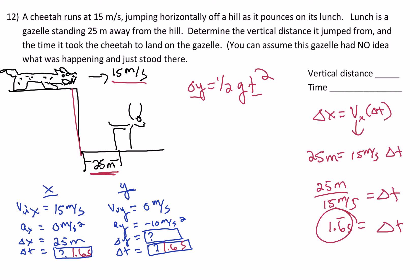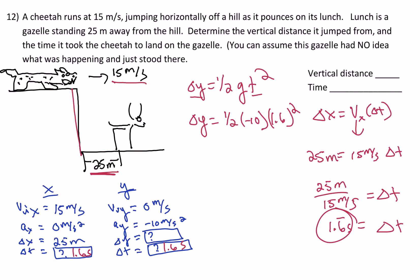Now we substitute into delta y. Delta y equals one-half times negative 10 times 1.6 squared. One-half times negative 10 is negative 5. And 1.6 squared gives 2.7 repeating. Multiplying by negative 5, I get negative 13.8 repeating. The actual height has to be positive, so the vertical distance is 13.8 meters. Our time is 1.6 repeating seconds. That's your answer to number 12.